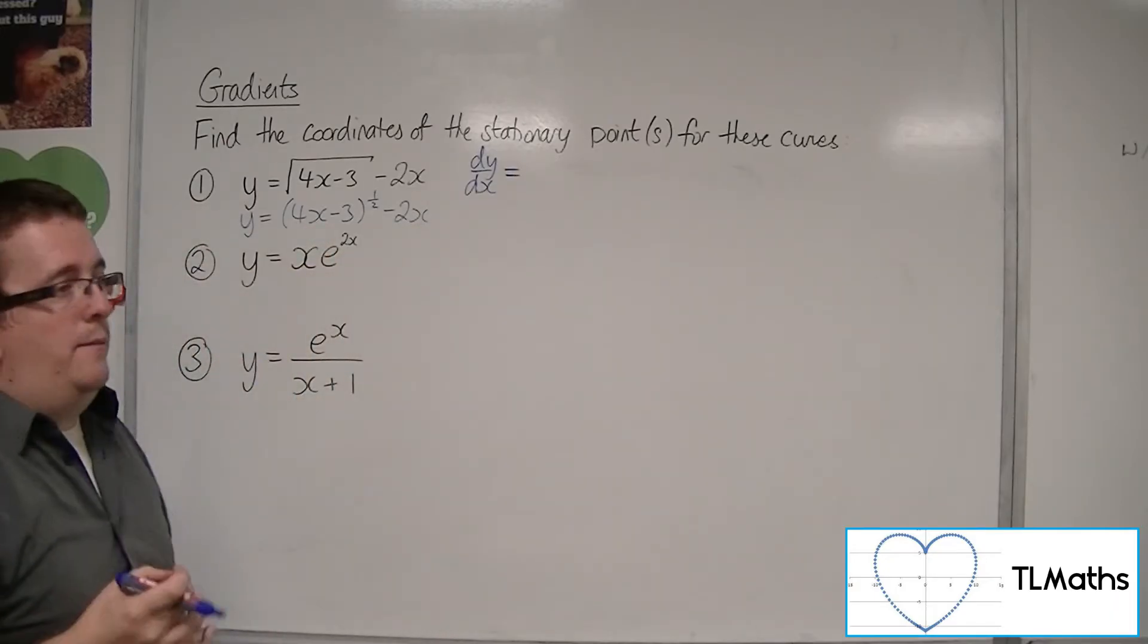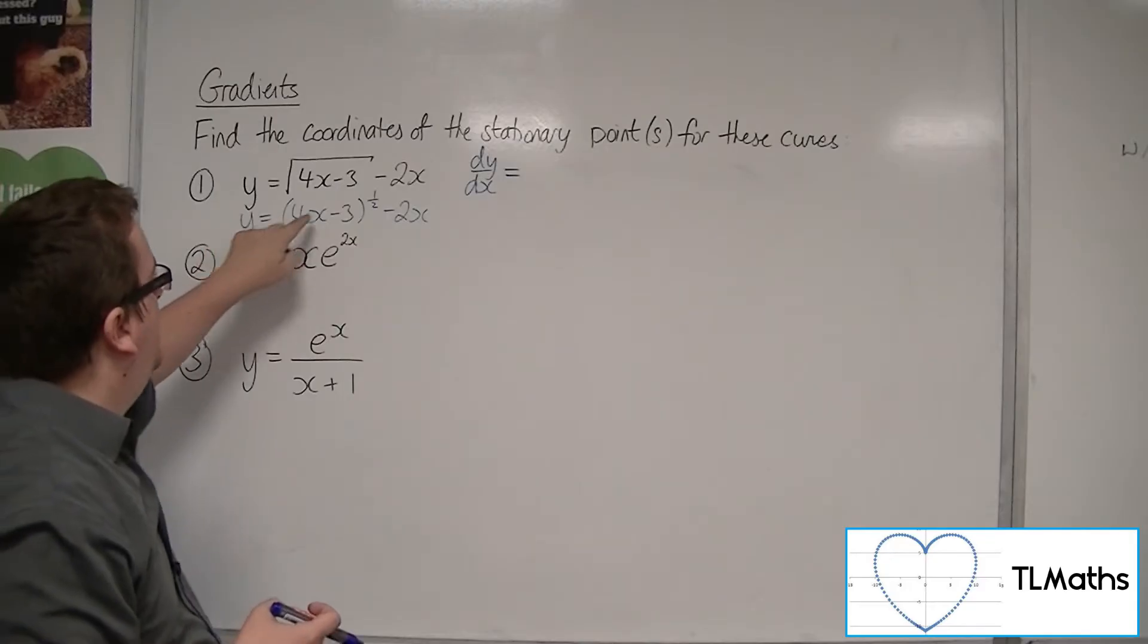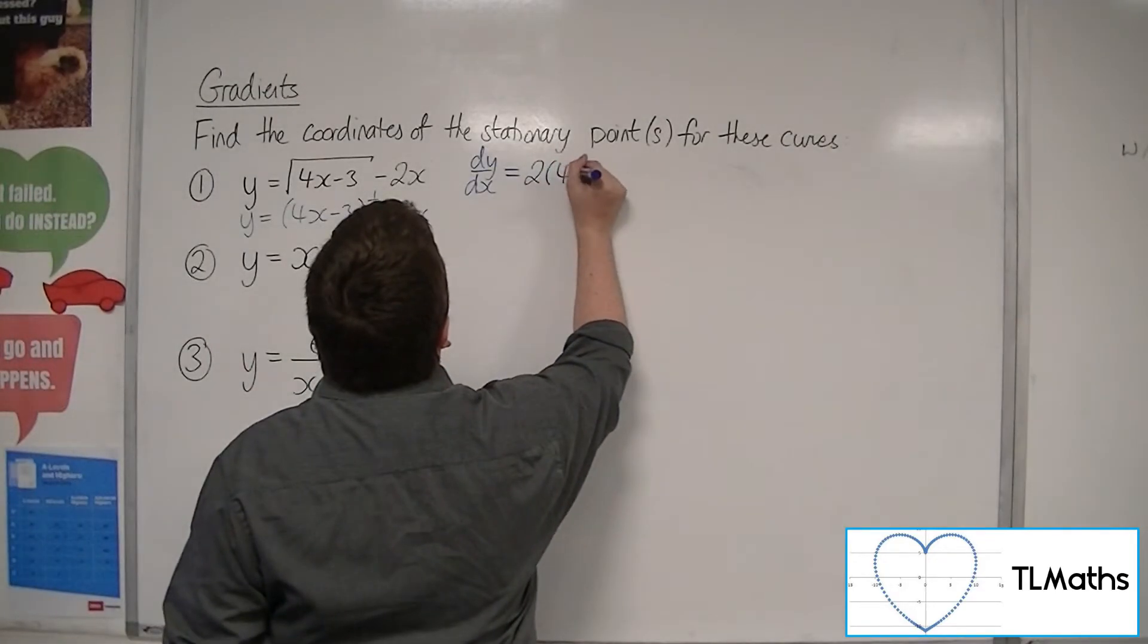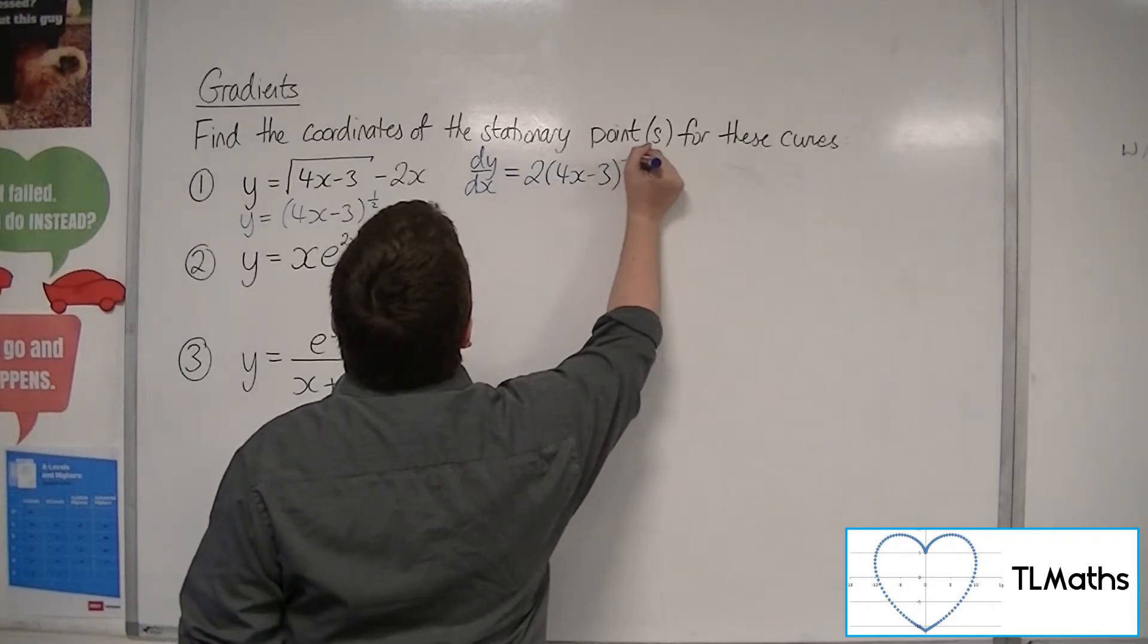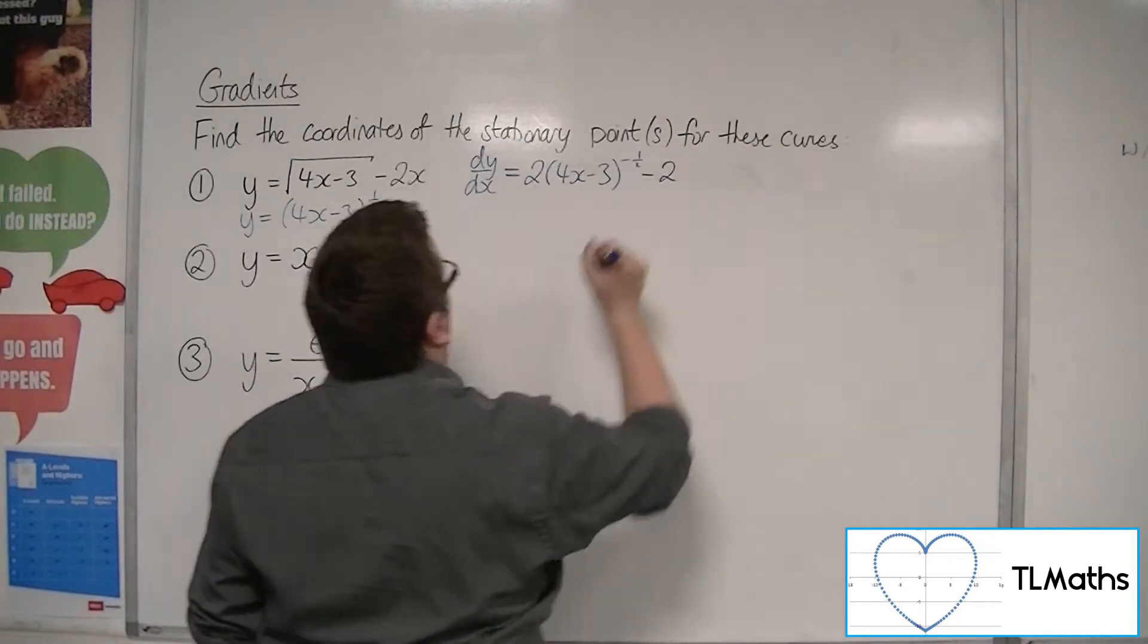So I'm going to use the chain rule for that bracket. So the derivative of what's inside is 4, that comes outside, the half multiplies with it, so I get 2(4x - 3)^(-1/2), taking 1 from the power, and the minus 2x differentiates to minus 2.